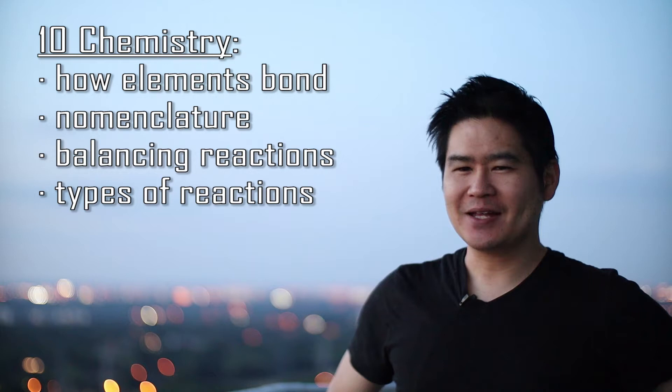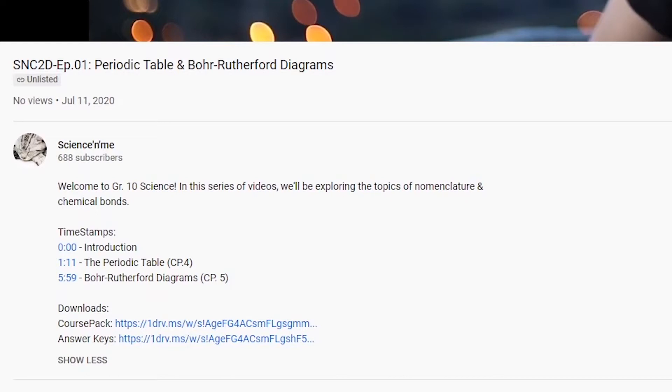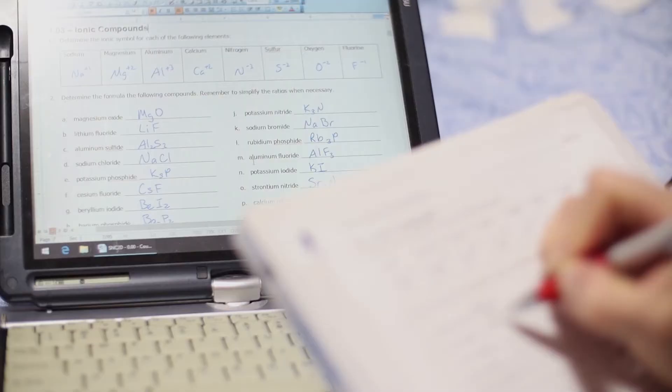If you want to jump to a particular chapter, scroll down to the description box below and you'll see the corresponding time codes. Also beside the time codes are the corresponding homework worksheets, and if you scroll down a little bit further below you'll see the answer key. Now when you do your homework, make sure that you honestly do the homework. Don't just blatantly copy off the answer key because really at the end of the day you're only cheating yourself.